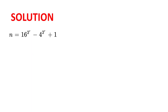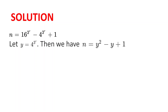Solution. Let y be 4 to the power of 3 to the power of r. Then we have that n is equal to y squared minus y plus 1, since 16 to the power of 3 to the power of r is equal to 4 squared to the power of 3 to the power of r, which is equal to 4 to the power of 3 to the power of r, squared.